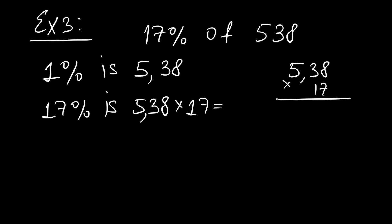7 times 8 is 56, we remember 5. 7 times 3 is 21, with our 5 this is 26, we remember 2. 7 times 5 is 35, with our 2 this is 37.